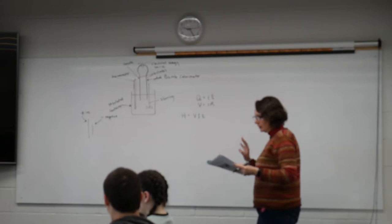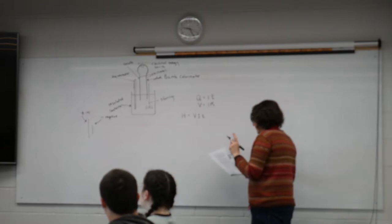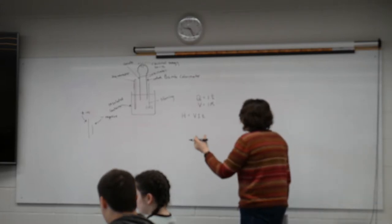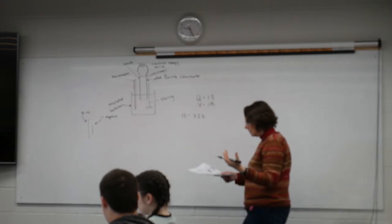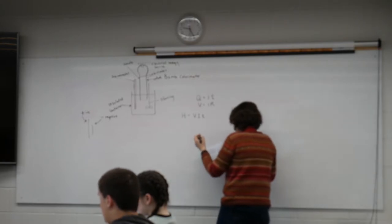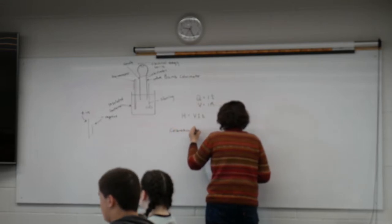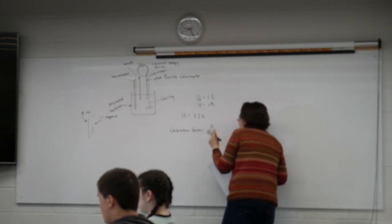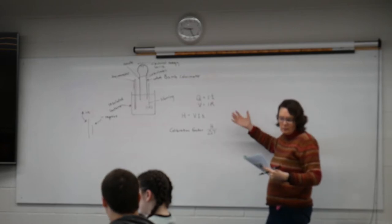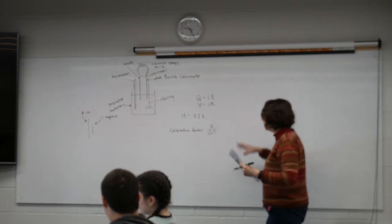Here's where things get a little bit confusing. What we want to know, then, is what's the change in enthalpy per degree? We want to know the calibration factor, ΔH over ΔT. So this is going to tell me how much energy is changed. What's the energy per degree? We don't want to just know the total energy. We want to know the energy per degree.